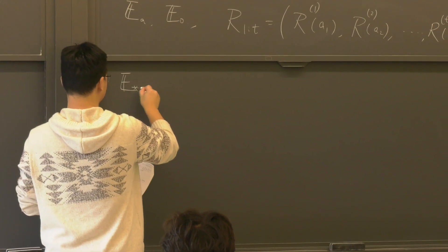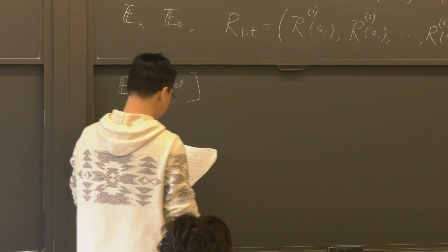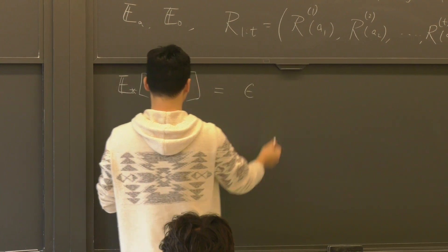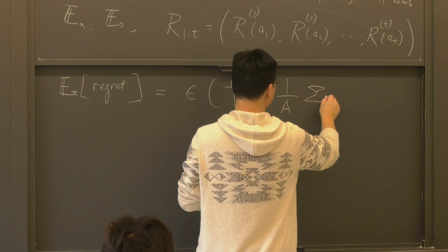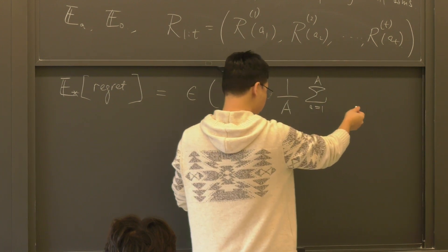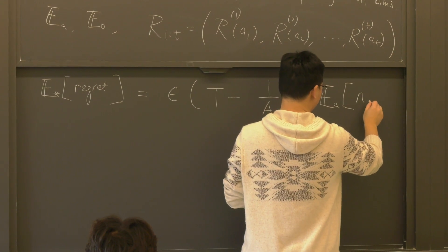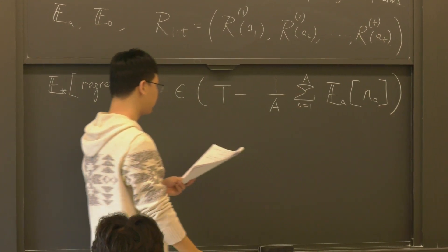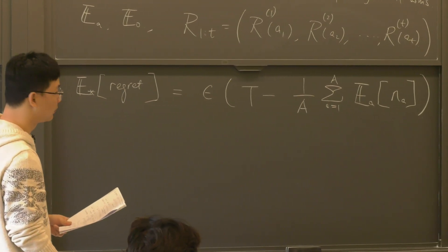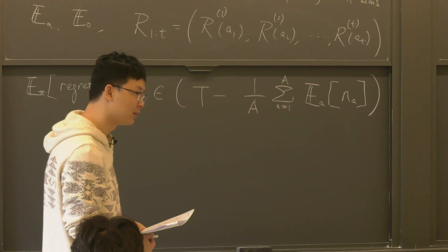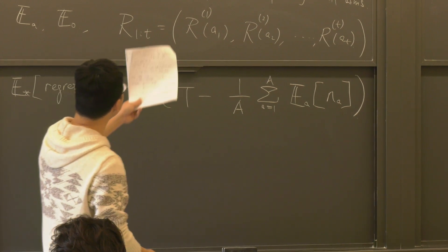At the end of the last lecture, we computed the regret. This regret equals epsilon times T minus one over A, summation over little a from 1 to capital A, where we take expectation E_a of N_a — how many times the algorithm pulls arm a when arm a is the special arm.